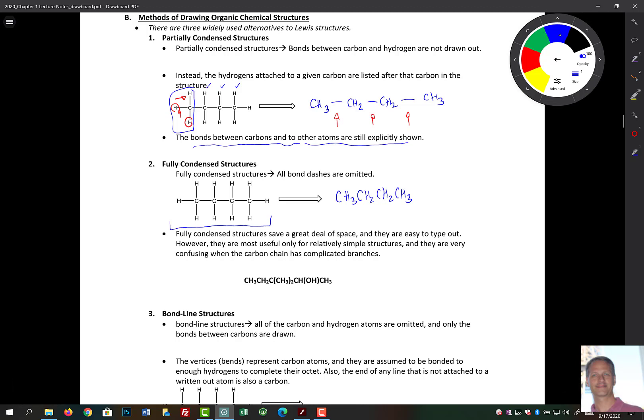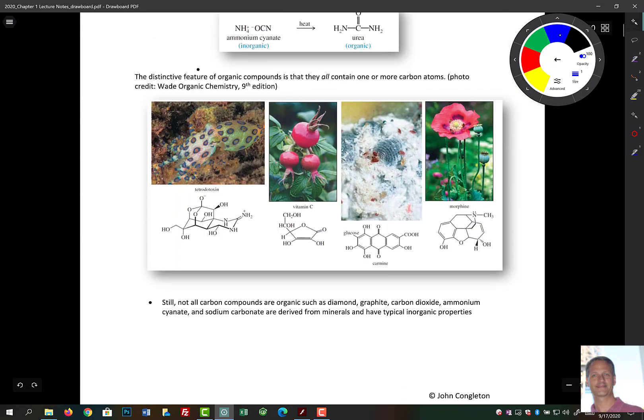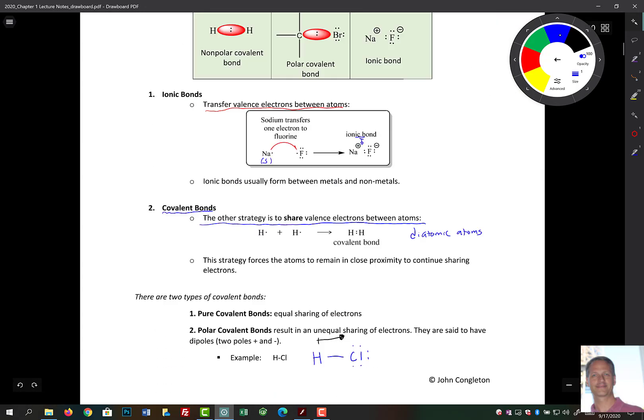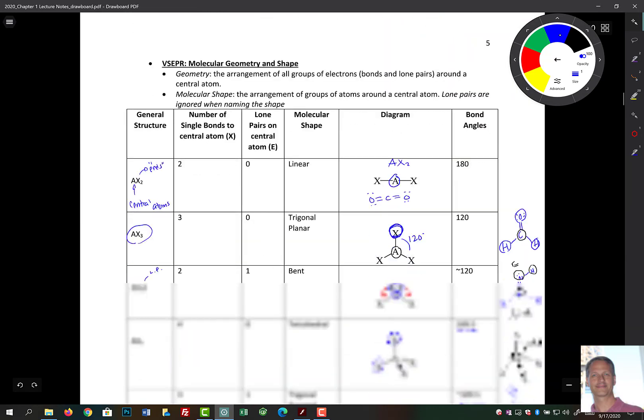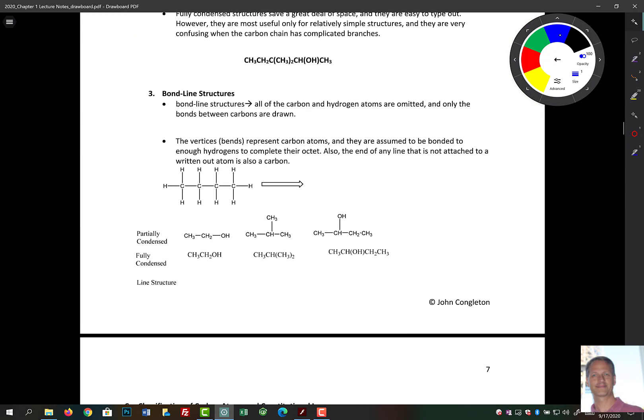Now, that still requires a bunch of writing out. And if you had a really big structure, can you imagine, just to flip back, look at these structures from our first lecture here. Drawing these in some type of a condensed format is going to be really hard. When you look at these structures, you'll notice that there's not a lot of carbon atoms that are drawn out here. And that leads us to this next section, which is bond line structures.